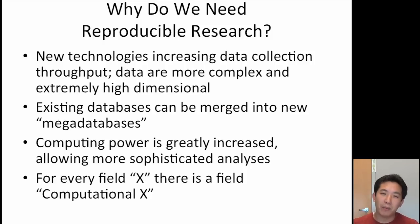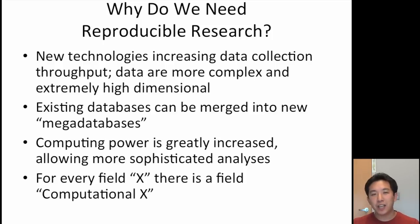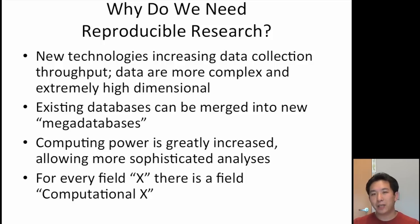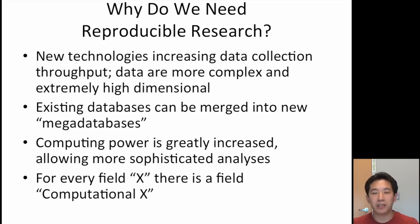What is driving this need for a reproducibility middle ground? There are a lot of new technologies on the scene in many different fields, including biology, chemistry, and environmental science. These technologies allow us to collect data at a much higher throughput, and we get very complex and high-dimensional data sets almost instantaneously compared to even just 10 years ago. Furthermore, we have computing power that allows us to take existing databases and merge them into even bigger databases, creating new data sets out of previously inaccessible data.